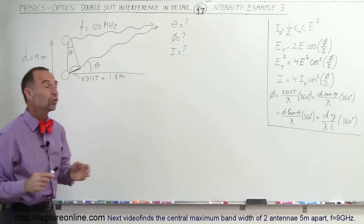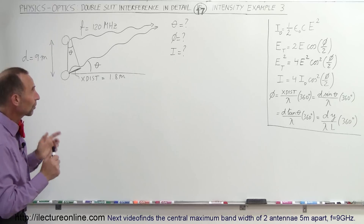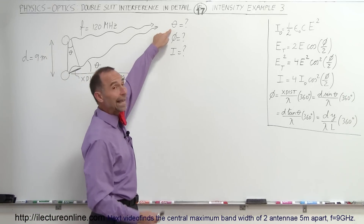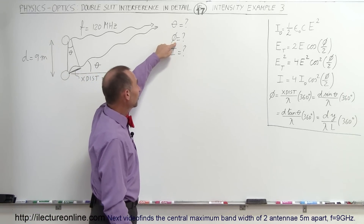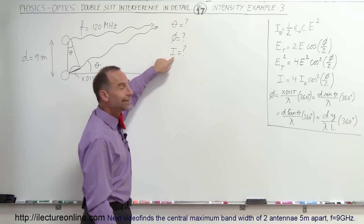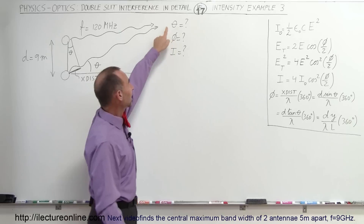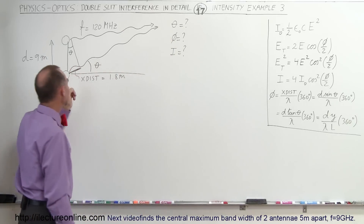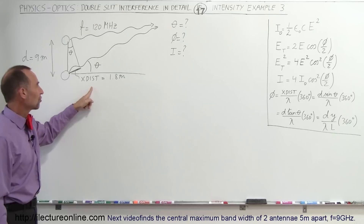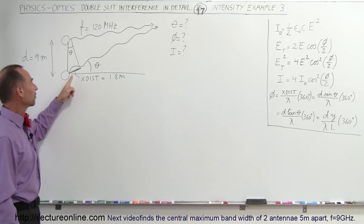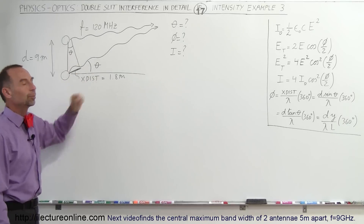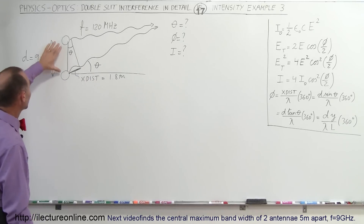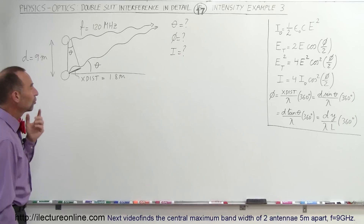We're going to use those equations to determine the angle theta, the phase angle phi, and the intensity at a particular location where the extra distance traveled by one wave compared to the other is 1.8 meters. Remember, the distance between the two antennas is 9 meters.